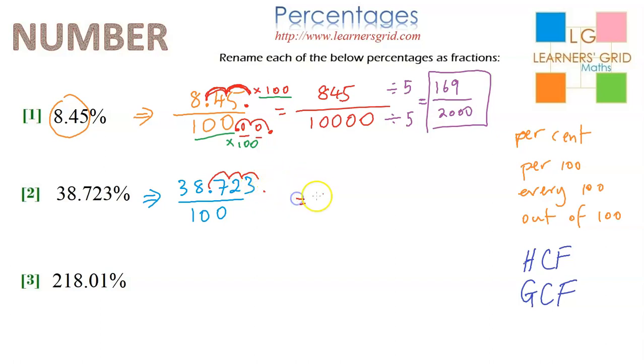And hey presto: 38,723 with the decimal point now here. What have I just done? I've multiplied it by 1,000.